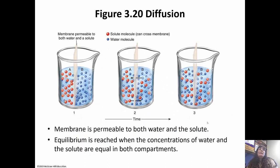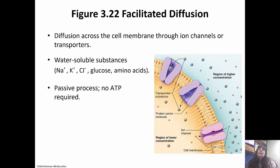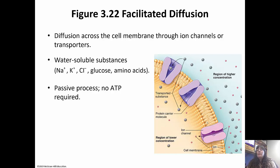Here's a picture showing diffusion — you have solute molecules versus water molecules. If the membrane is permeable to both, equilibrium is reached when concentrations on both sides are equal. Facilitated diffusion happens across the membrane through ion channels or carrier proteins. Some proteins have a channel so ions can pass directly through. Others, called carrier proteins, attach to the substance and transport it in. Sodium, potassium, chloride, glucose, and amino acids all undergo facilitated diffusion. It's still a passive process — no ATP required, still moving from high to low concentration.